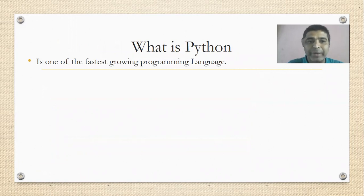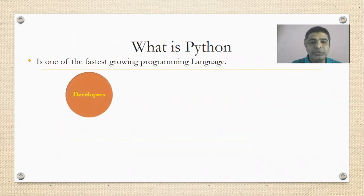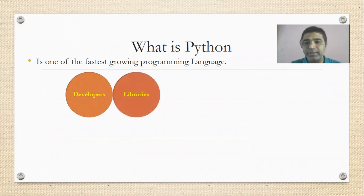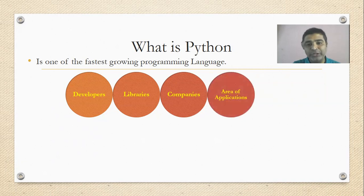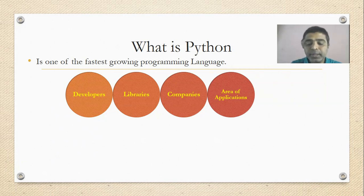So what is Python? Python is one of the fastest growing programming languages — on the basis of the number of developers using this language, the number of libraries available, the number of companies using Python, and the areas of application. Python is very widely used in different types of multiple applications, and in all those sectors Python is in the top lead.